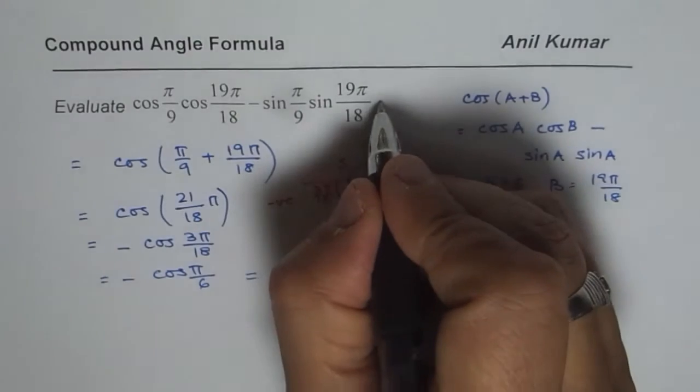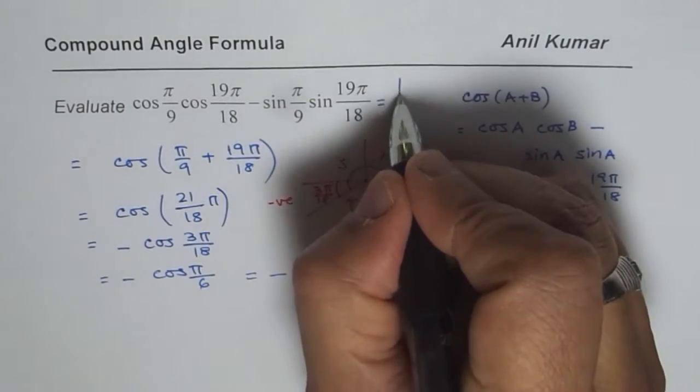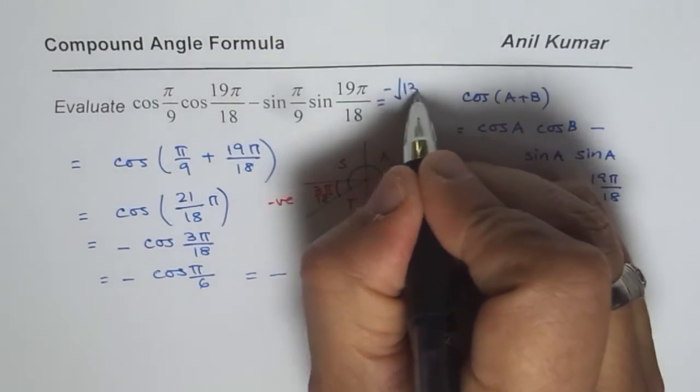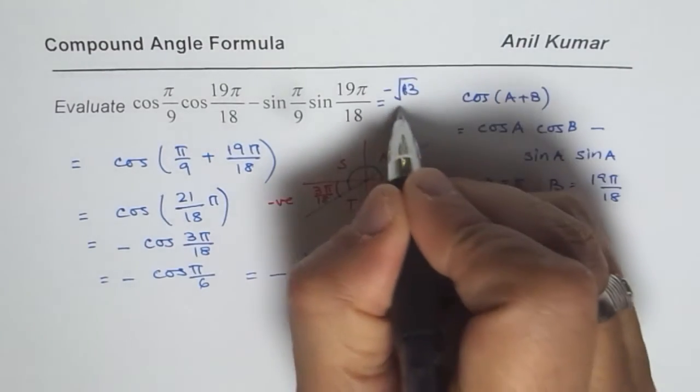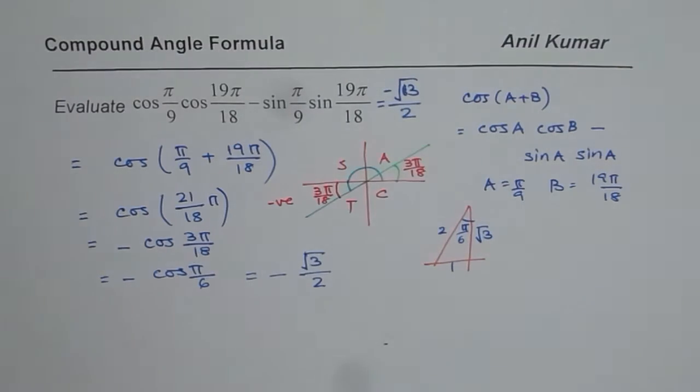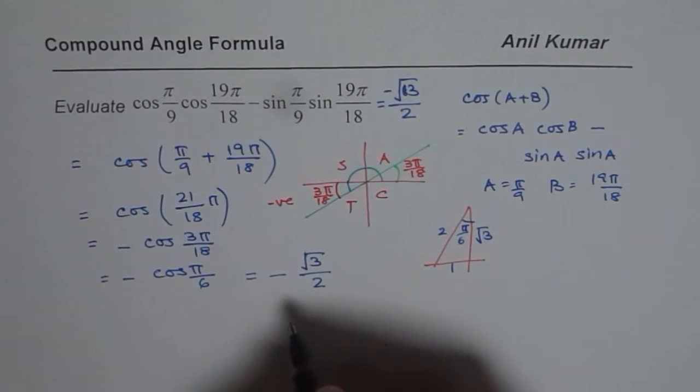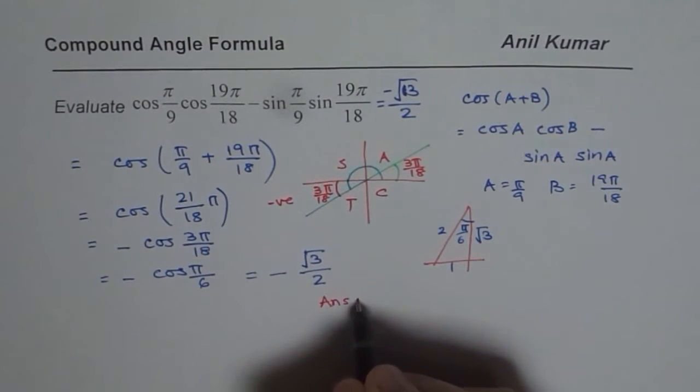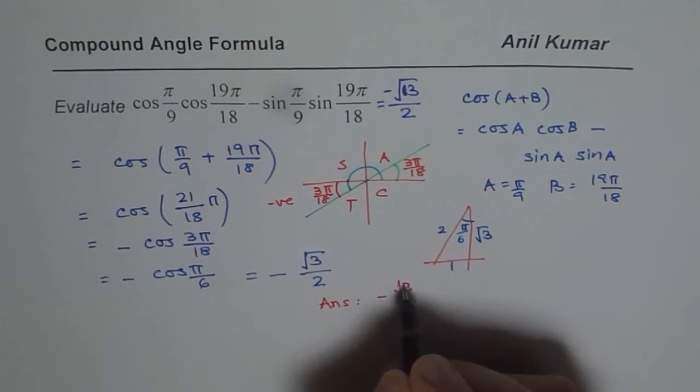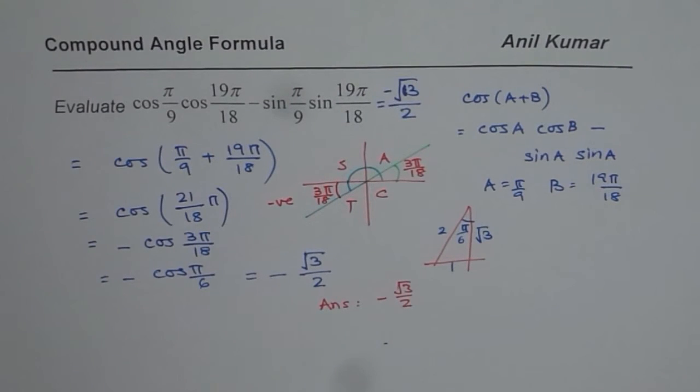So you can write down this expression as equals to negative square root 3 over 2. So that is what our answer is. So let me clearly write down the answer. Answer is minus square root 3 over 2. So that is how you should be solving such a question. Thank you.